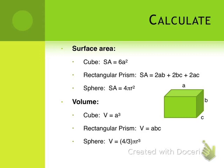When we calculate surface area, for a cube it is six times the length of a side squared. For a rectangular prism, you're going to take two times side A times side B, plus two times side B times side C, plus two times A times C.